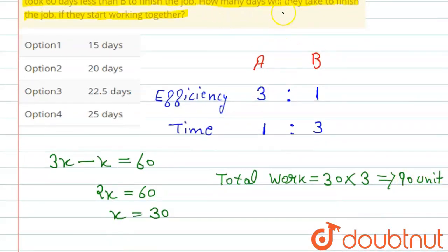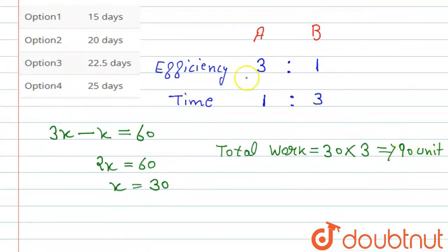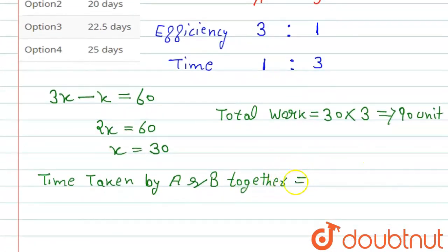Now we will do both working together. How many days will they take to complete this? Total work is 90, and their combined efficiency is 3 and 1, that is 4. So time taken by A and B together: total work is 90 units, and both efficiency is 3 and 1, that is 4. So 90 divided by 4.